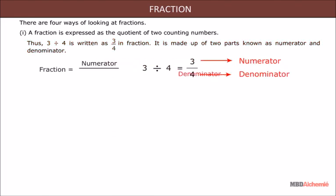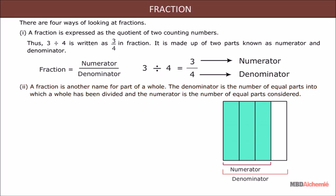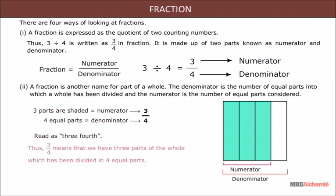Two: a fraction is another name for part of a whole. The denominator is the number of equal parts into which a whole has been divided, and the numerator is the number of equal parts considered. For example, in the figure, out of four equal parts, three parts are shaded. This is read as three-fourths. Here, three is the numerator and four is the denominator. Thus, 3 upon 4 means that we have three parts of the whole which has been divided into four equal parts.